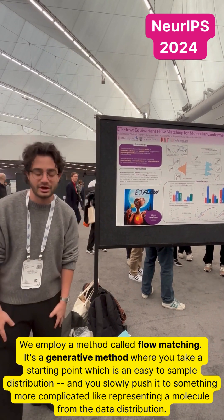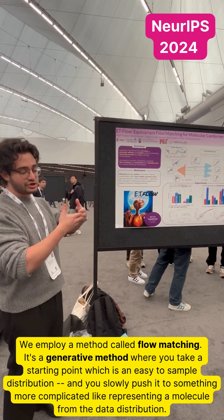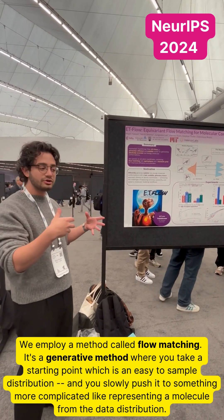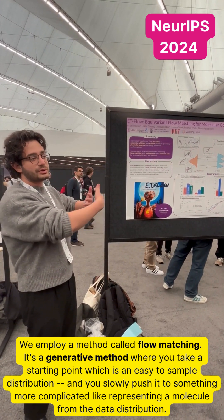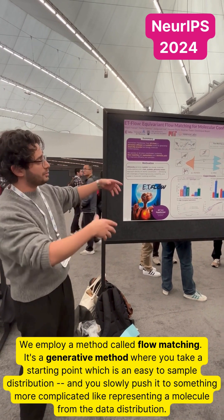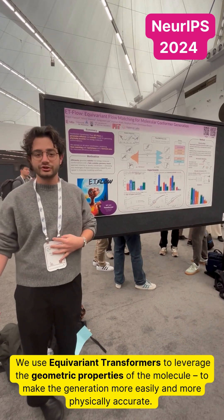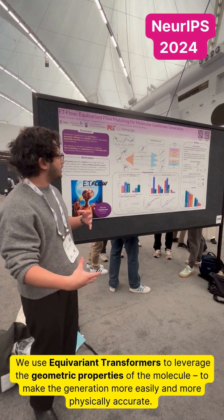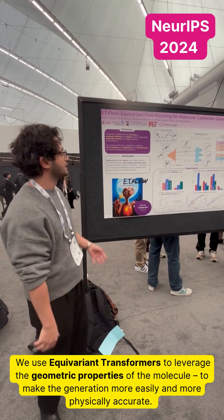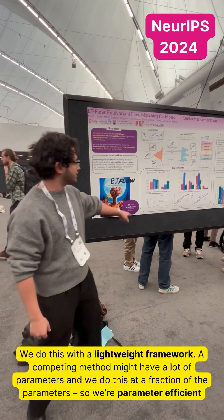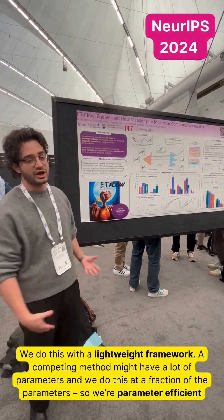We employ a method called flow matching. It's a generative method where you take a starting point, which is an easy-to-sample distribution, and you slowly push it to something more complicated, like representing a molecule from the data distribution. We use equivariant transformers to leverage the geometric properties of the molecule to make the generation easier and more physically accurate, and we do this with a lightweight framework. The competing methods might have a lot of parameters, and we do this at a fraction of the parameters.